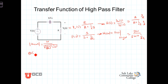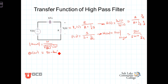The phase of the frequency response equals the phase of the numerator. For the high-pass filter, the S in the numerator, when replaced with j omega, leaves a j omega in the numerator — a pure imaginary term — and that angle is 90 degrees minus the phase of the denominator, which is the arctangent of the imaginary part omega divided by the real part 1 over RC.